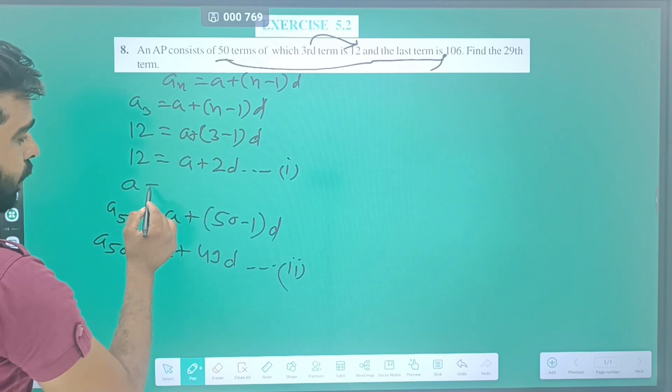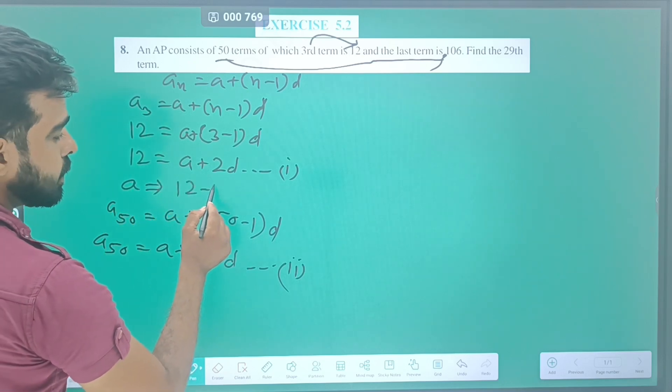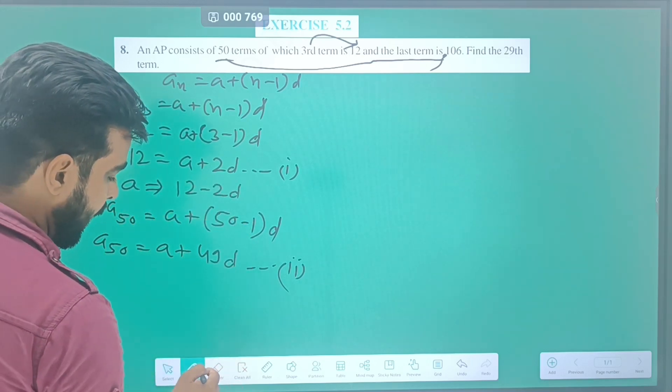What is the value of a? a = 12 - 2d. This is the value of a.